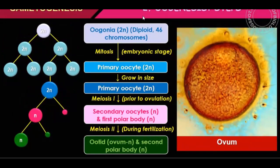Now let's read the flowchart. Oogonia undergo mitosis, after which they are called primary oocytes. Primary oocytes are arrested at prophase 1. Then they grow in size. After meiosis 1, they become the secondary oocyte and first polar body.